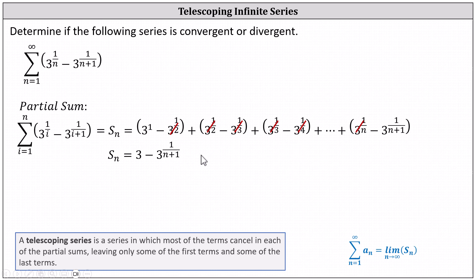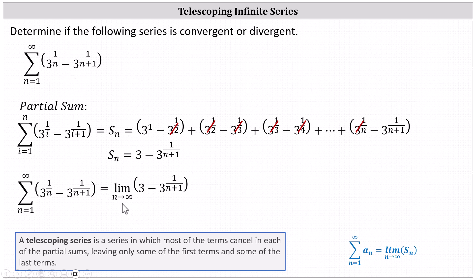And now we need to determine the limit of S sub n. The given infinite series equals the limit as n approaches infinity of S sub n. Notice as n approaches infinity, the exponent of 1 divided by the quantity n plus 1 approaches 0, because the numerator is 1 and the denominator increases without bound. Therefore the limit is equal to 3 minus 3 to the power of 0, or 3 minus 1, which equals 2.